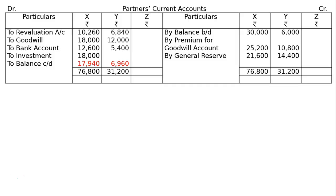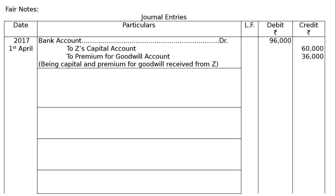Journal entries — proper format. First entry: bank account debited Rs. 96,000 — to Z's capital account Rs. 60,000 and to premium for goodwill account Rs. 36,000. Narration: being capital and premium for goodwill received from Z.